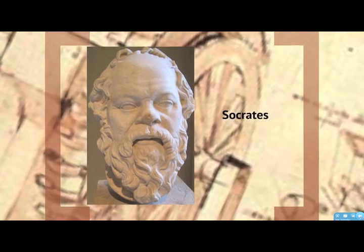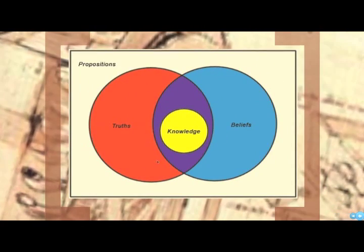Here's Socrates for you — a nice little Venn diagram. There are lots of truths out there that people don't believe. The economy is bad but politicians don't necessarily act like they believe it. And there are a lot of things people believe that just aren't true — aliens have never visited the earth; there are no facts to support it. So belief with no truth. Where those two intersect is where we want to be in science. That's where knowledge lies — true knowledge.